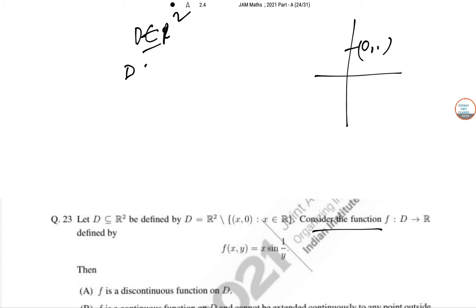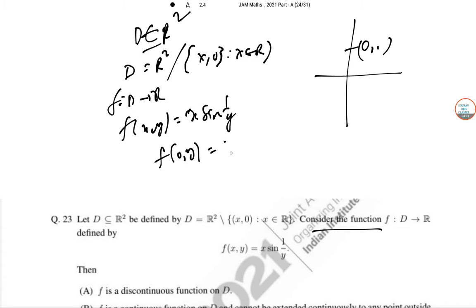So, D belongs to R square. D equal to X, Y belongs to R. F of X, Y. So, F of zero Y is zero times sine of one by Y.